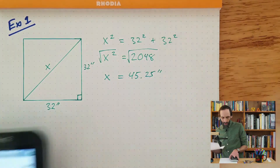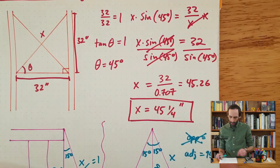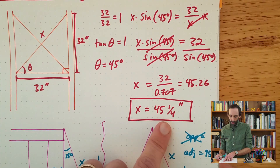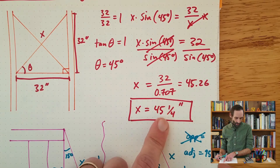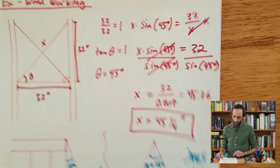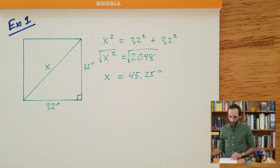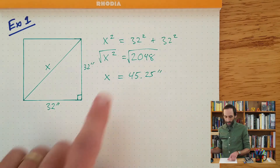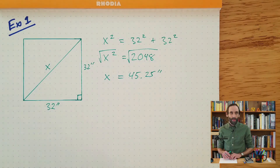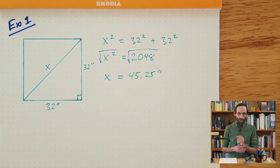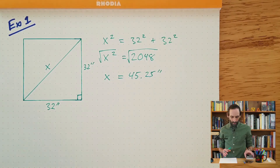We can go back to our previous paper, and we see — sure enough — 45 and a quarter. So we got the same answer, and as you can see, this particular approach is a little bit quicker.